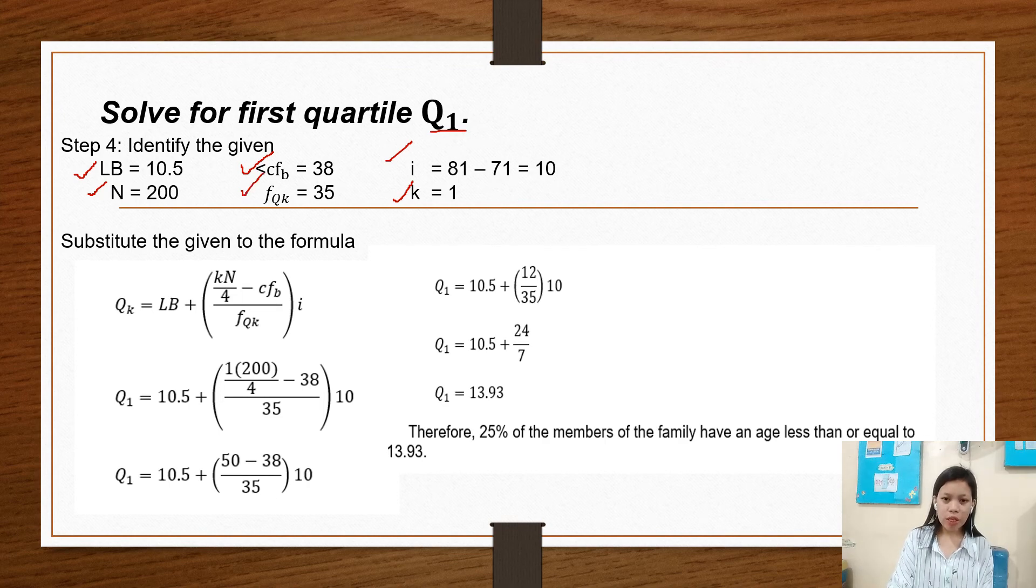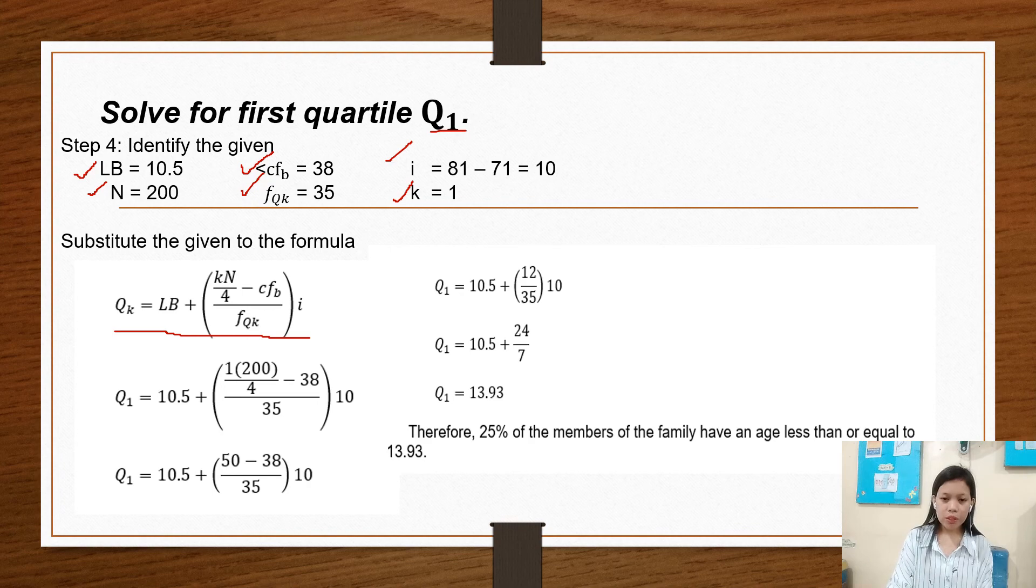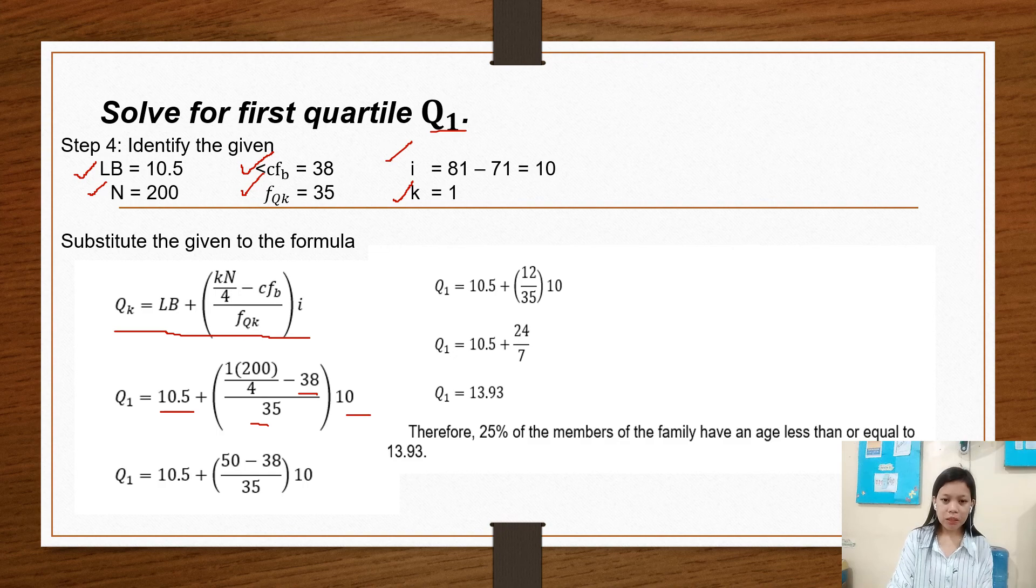Substitute the given to the formula. So Q sub K, our formula is Q sub K equals LB plus KN over 4 minus cumulative frequency before over frequency of the quartile 1 class times interval. So we have to substitute the value for LB. KN minus cumulative frequency is 38 and frequency is 35. The interval is 10.